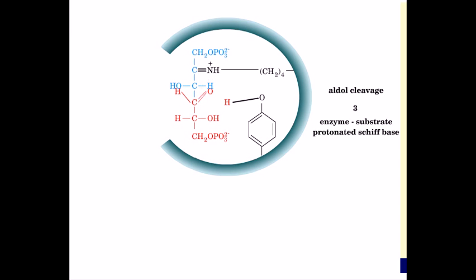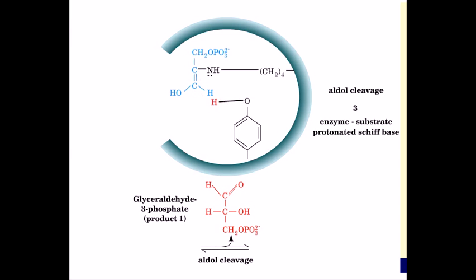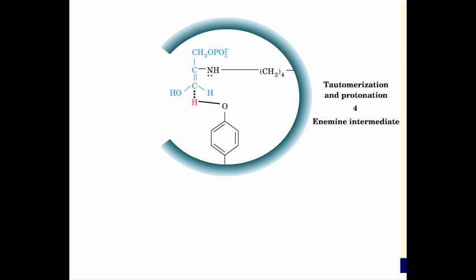In step 3, tyrosine acts as a general base, leading to aldol cleavage between the third and fourth carbons of the substrate. This forms an enamine intermediate and releases product 1, glyceraldehyde-3-phosphate.